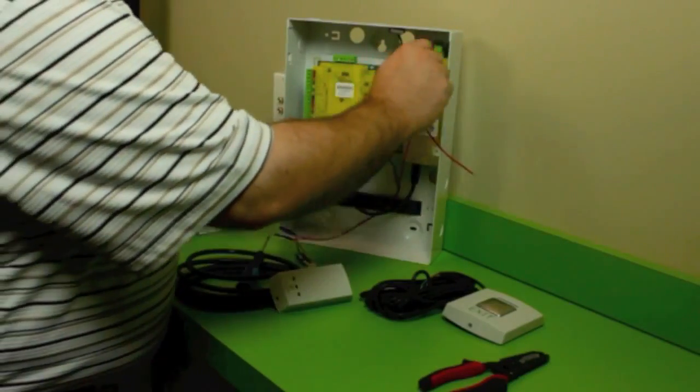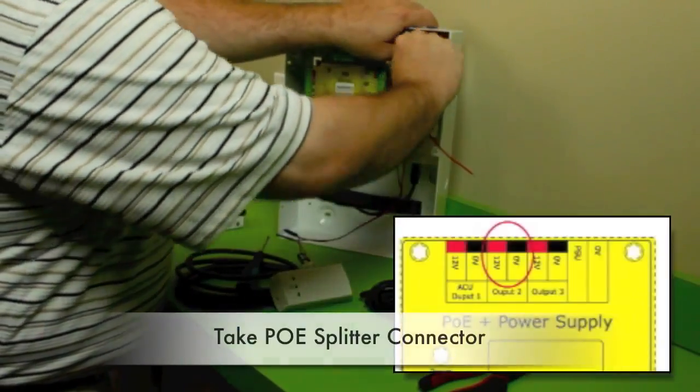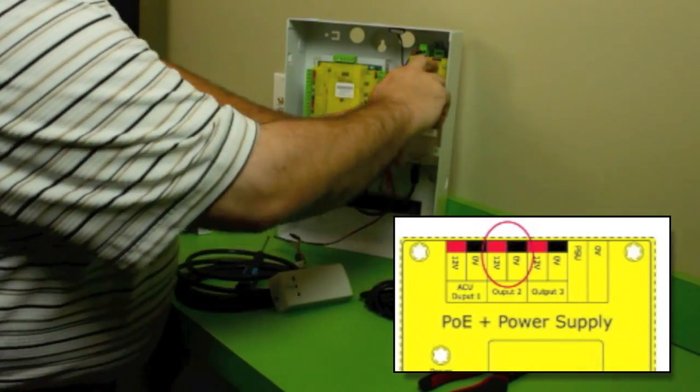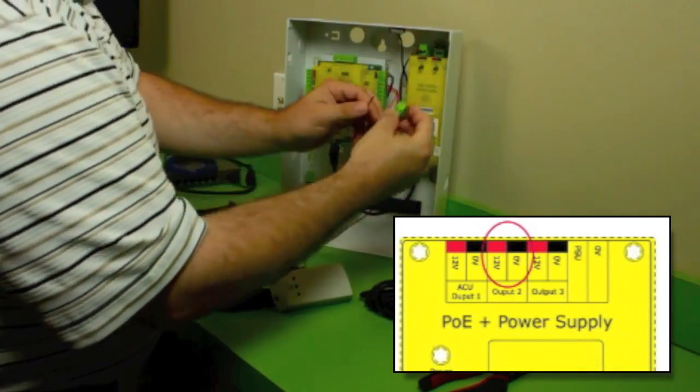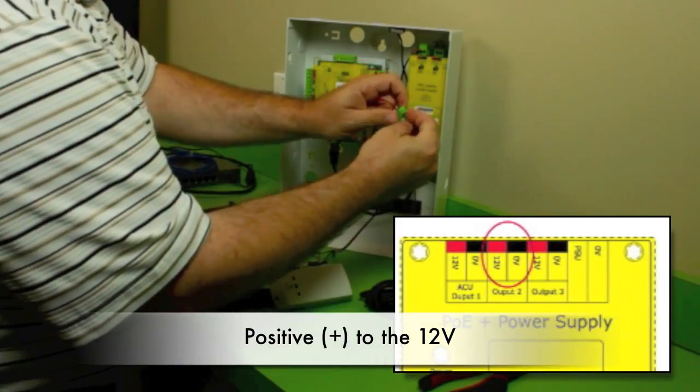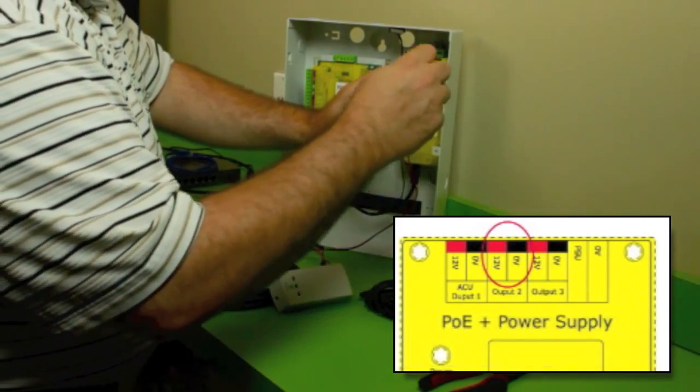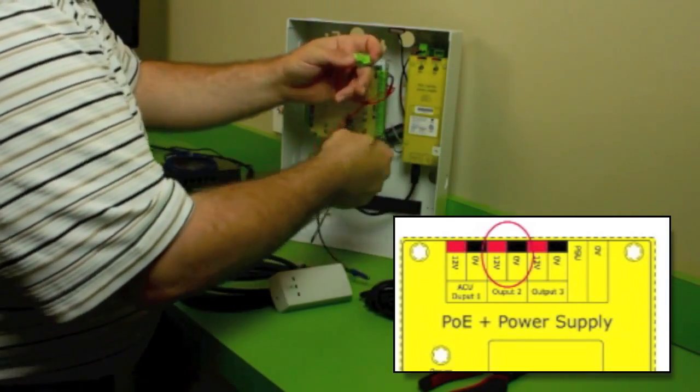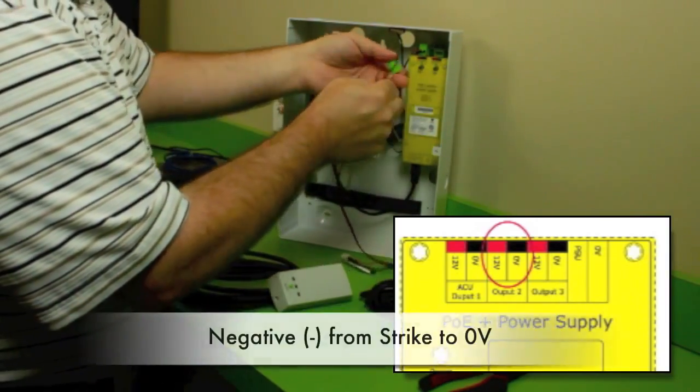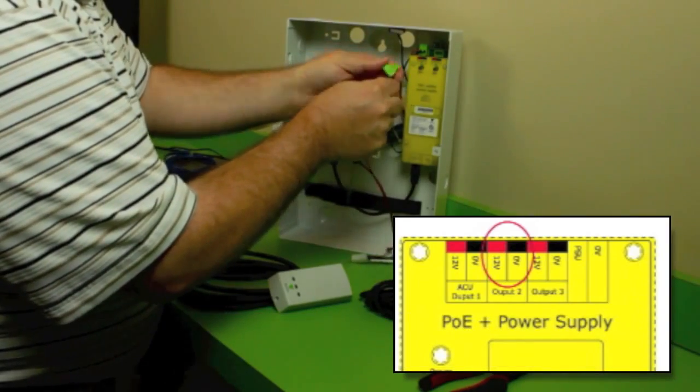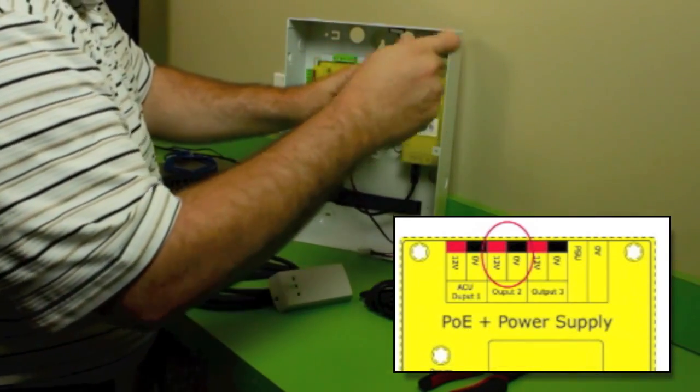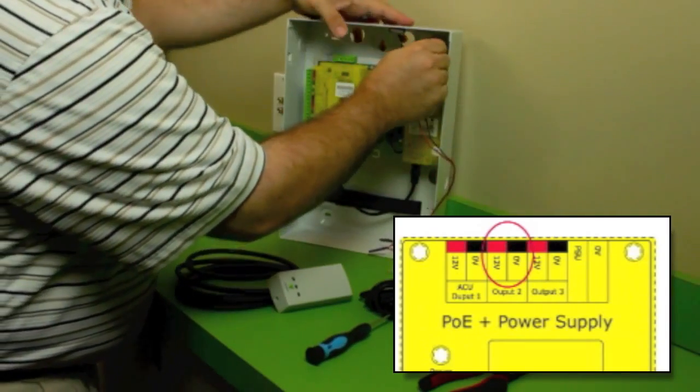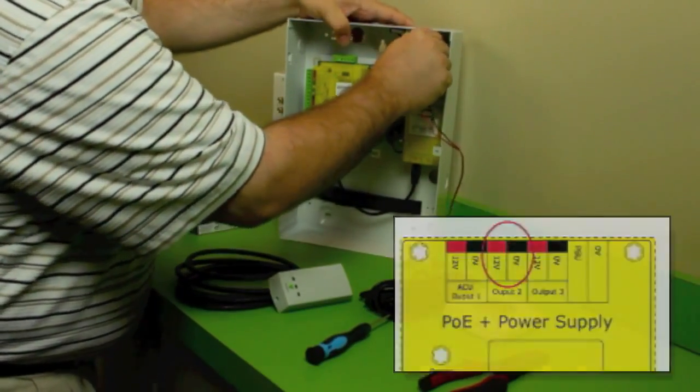So next thing, now that you have those in there, you want to pull your connector off of your PoE splitter. Notice it's 12-volt and zero-volt. This lines up just like that. Your positive is going to go in 12-volt, so red into positive. Then your negative wire from your strike will go into the zero-V. Once these are all in, plug it right back in.